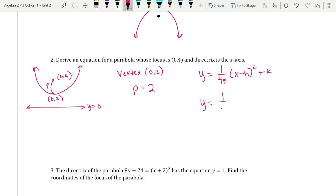So we get 1/8, four times two is eight. x minus zero squared plus two. And we can clean that up a little bit, because x minus zero is just x. And there's your equation.